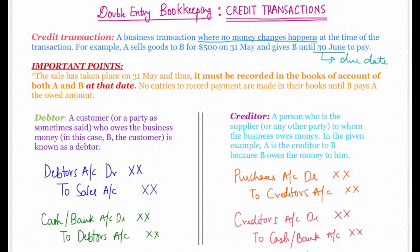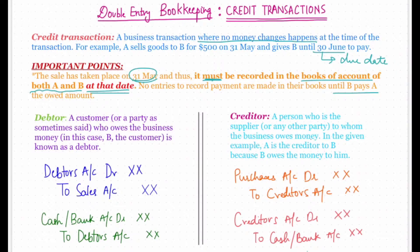The sale has taken place on 31st May and thus it must be recorded in the books of account of both A and B — that is, the seller and the purchaser — at that date. No entries to record payment are made in their books until B pays A the owed amount.